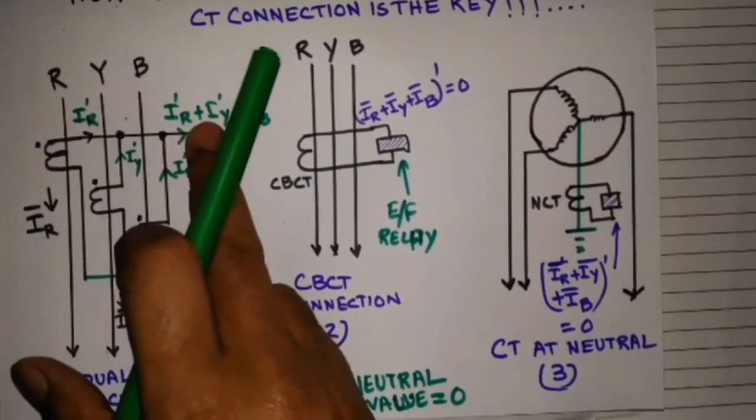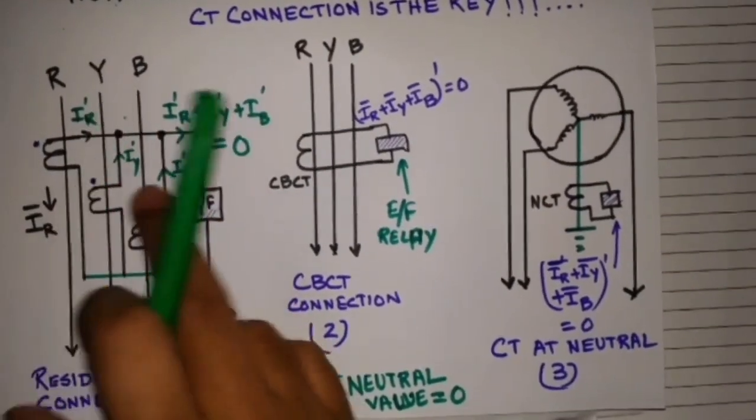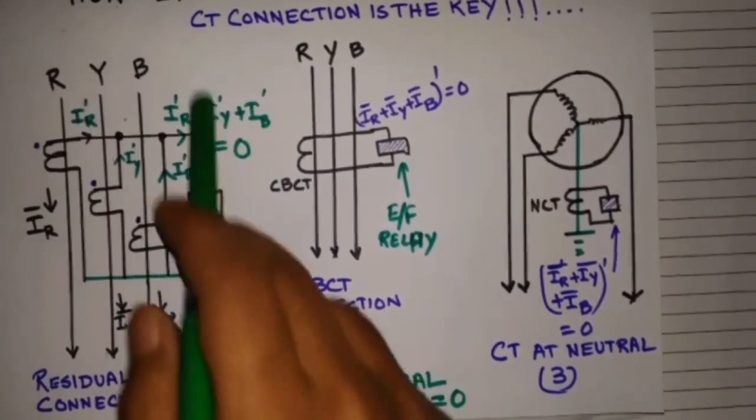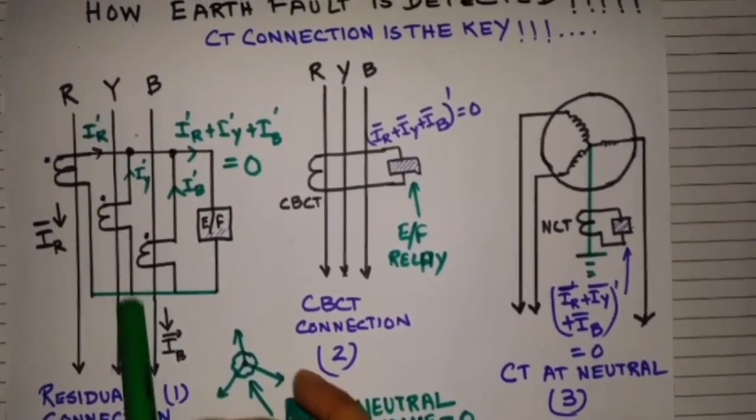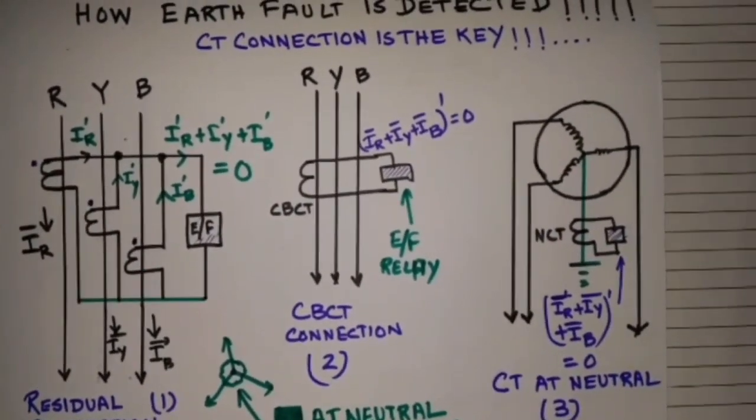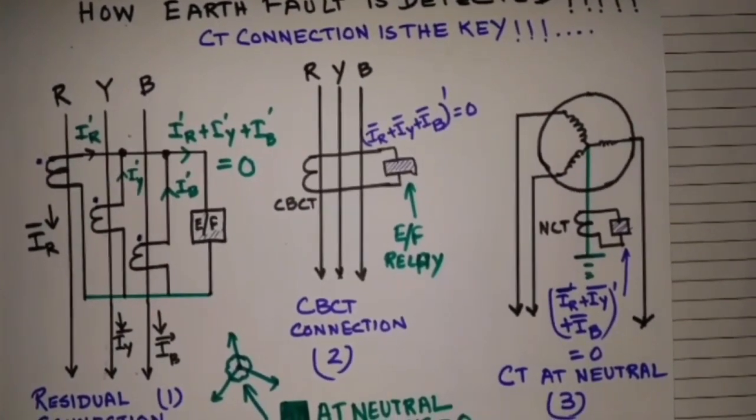So these two will oppose each other in their summation. So for that case, the relay will not pick up. For this type of connection, only if there is an earth fault, then only the relay will pick up. For any other fault, the relay will not pick up.